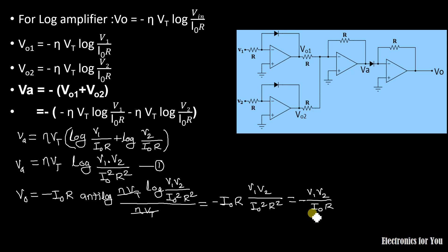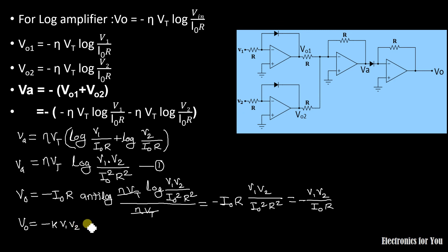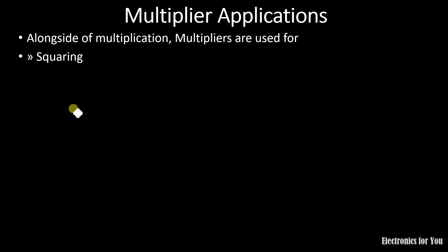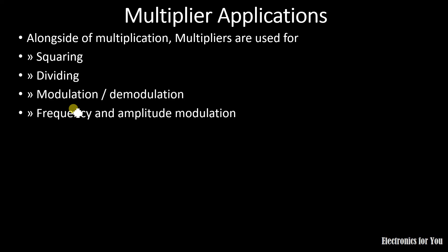The output voltage equation for the multiplier is Vo = −V1·V2 / (I0·R). Since I0 is the saturation current and R is the resistance, both are constants. Replacing 1/(I0·R) with the scaling factor k, we get Vo = k·V1·V2, confirming this circuit as an analog multiplier. Applications of the analog multiplier include squaring, dividing, modulation, demodulation, frequency and amplitude modulation, and automatic gain control.